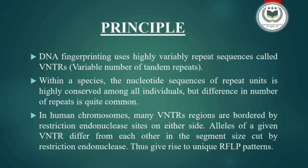Now talking about the principle of DNA Typing. This technique uses Variable Number of Tandem Repeats, or VNTRs, which are highly variable repeat sequences. Within the species, the nucleotide sequence or repeat unit is highly conserved among all individuals, but difference in the number of repeats is quite common. In human chromosomes, many VNTR regions are bordered by restriction endonucleases on either side. Alleles of a given VNTR differ from each other in segment size and are cut by restriction endonucleases, thus giving rise to a unique RFLP pattern.